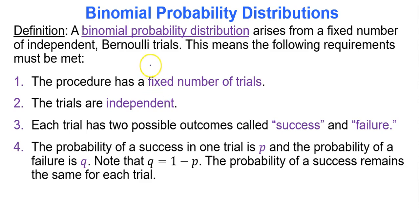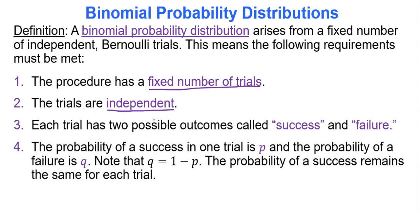First, the procedure has a fixed number of trials. Second, the trials are independent — meaning the outcome of the first trial does not impact the probability of any of the following trials.